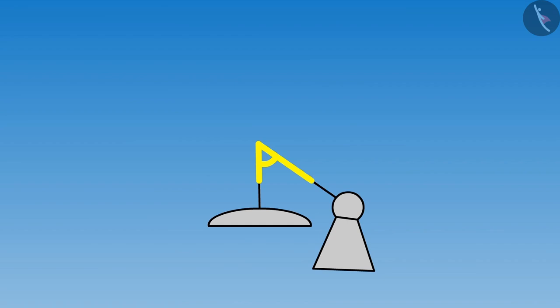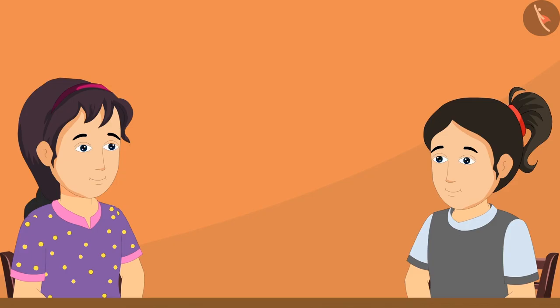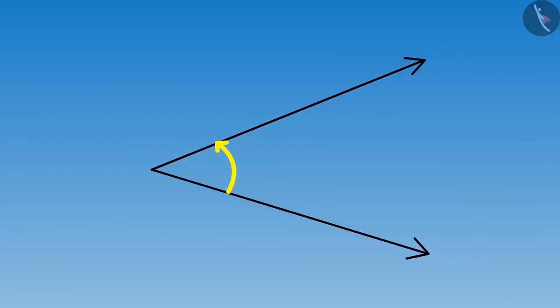Riva asks, how did you manage to make all three angles without changing the length of the handles or its shape? Meena replies, do you remember what an angle is? It tells us about the rotation between the lines. That means the length of the lines does not affect the angle.